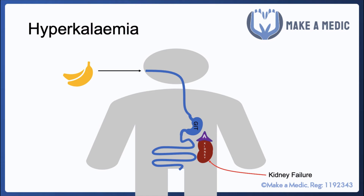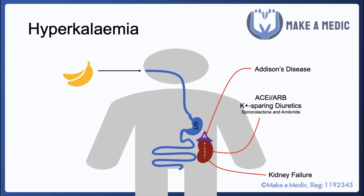For hyperkalemia, kidney failure is a very important cause because the kidneys are responsible for removing potassium from the blood. ACE inhibitors and angiotensin receptor blockers, which interrupt the aldosterone pathway, and potassium-sparing diuretics such as spironolactone and amiloride can promote potassium retention. The opposite of Cushing's and Conn's is Addison's disease, in which you get primary adrenocortical failure and an inability to produce aldosterone and cortisol, resulting in potassium retention.